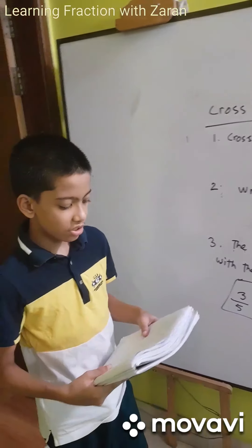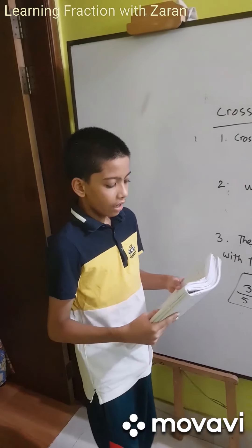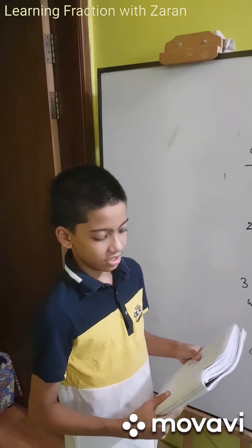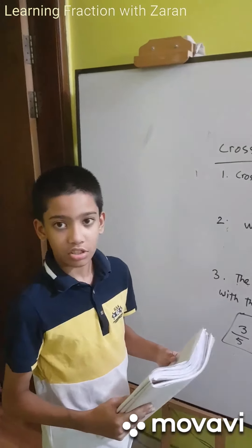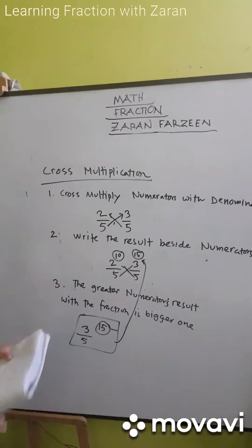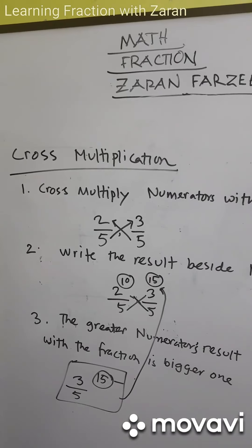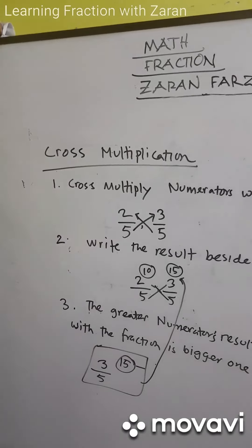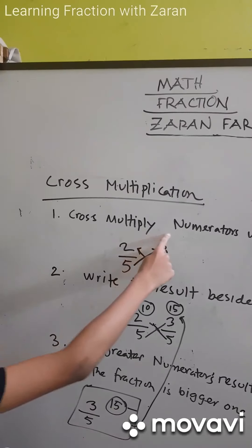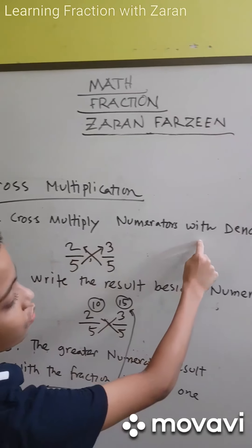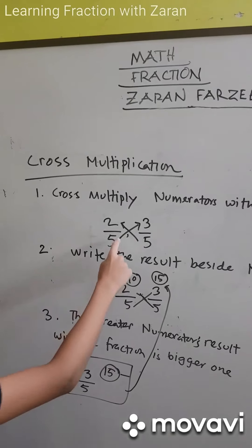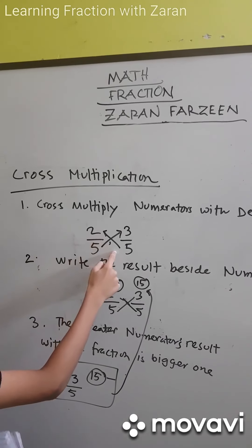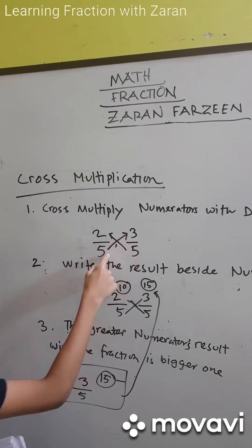Now I am going to teach you how to identify which fraction is larger or smaller. I will teach you two techniques. The first one is to cross-multiply the numerators with denominators. First, multiply 2 with 5, then multiply 3 with 5.